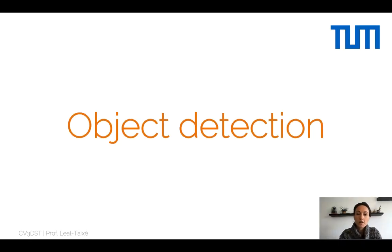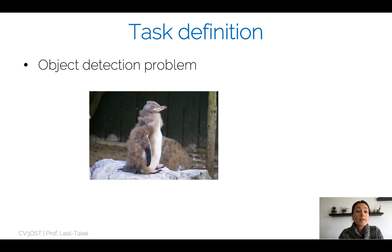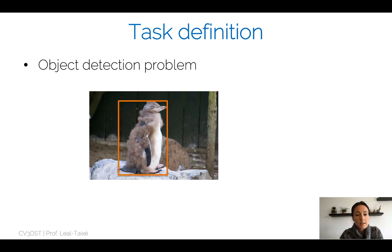Hello and welcome to the lecture on object detection. Let's start by defining what object detection is — what is this task that we actually have to solve? For the object detection problem, we start with an image, and what we want to find is all the interesting objects in that image. In this case, we can see a penguin, and how we want to represent it is through a rectangle that fits tightly around the object inside.